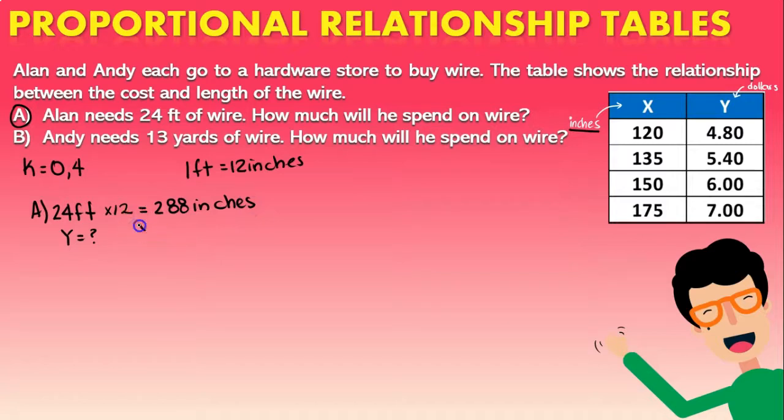Now you have to remember with the formula y is equal to k times x, that y is equal to 0.04 times the value of x which is 288, and that is going to give us an answer of 11 dollars and 52 cents.